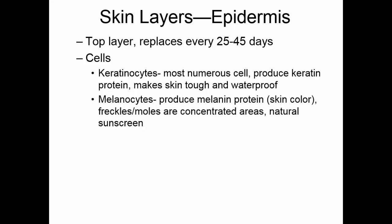Melanocytes produce melanin — a brown protein. When it collects in certain spots you get freckles, or moles if it's in a concentrated area. Melanin acts as the natural sunscreen, helping protect the DNA of skin cells from ultraviolet light damage. Then there are the Langerhans cells, which migrate around under the skin and help pick up bacteria that may be trying to invade deeper in the body — so they're involved in immunity.